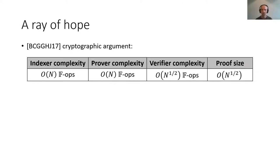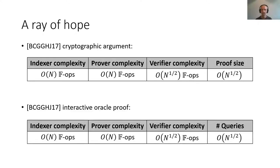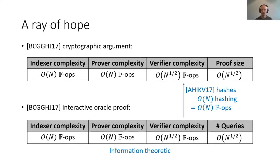There is one cryptographic argument published in 2017 that does manage to achieve a linear time prover and indexer complexity, and has a sublinear verification complexity and proof size — that's square root in the size of the circuit. That work is based on an interactive oracle proof with similar parameters. Once they've designed this information-theoretic interactive oracle proof, they note that you can compile it into a real cryptographic argument using a special hash function, which itself only incurs a constant computational overhead in the number of bits that you want to hash.